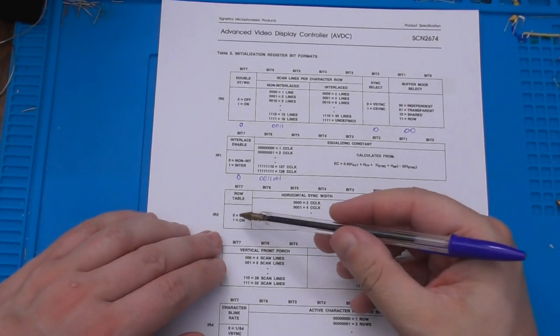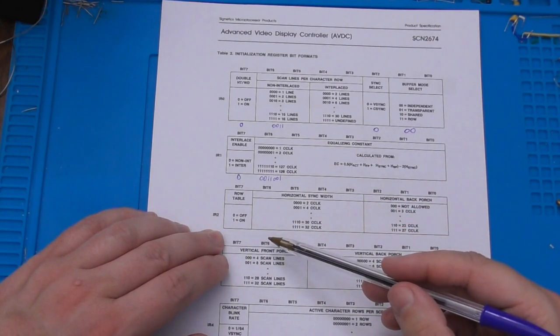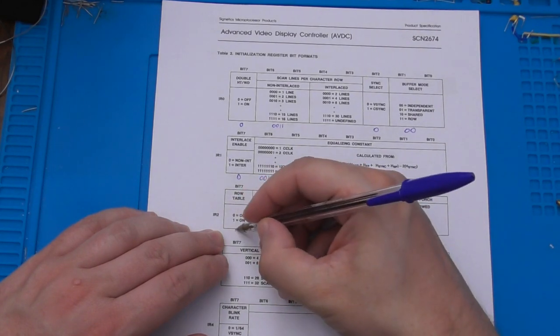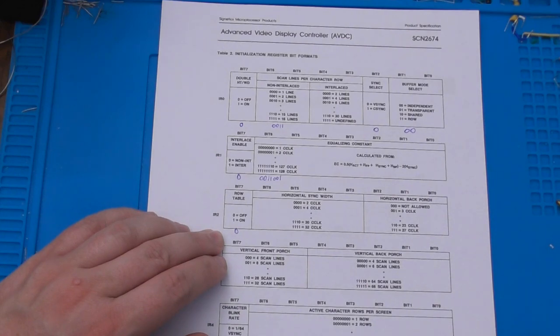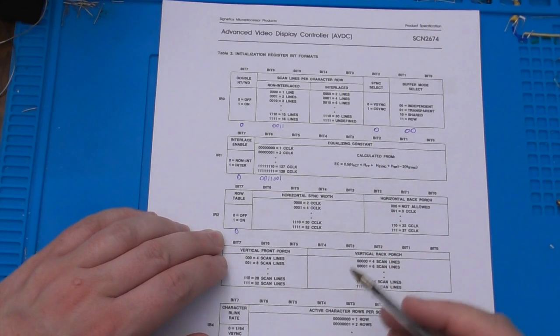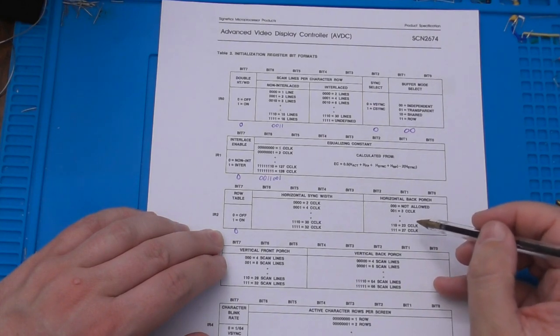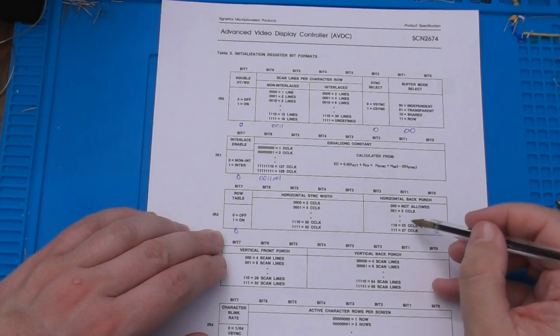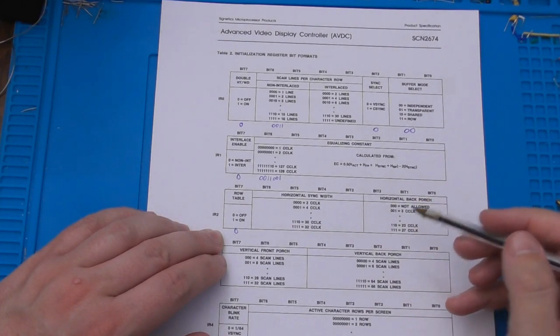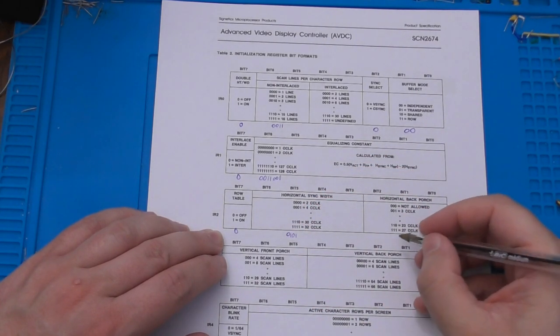Onto Initialization Register 2. The top bit enables the row table, which we're not using. Then there are a few bits to define the horizontal sync width, which is 12 character clocks for VGA. The last three bits define the back porch width, which is 6 character clocks. I'm going to round the back porch down to 5 because only odd numbers are supported here. These values need to be translated through these tables, which gives me 5 for the first one and 2 for the last one.